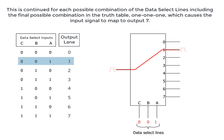This is continued for each possible combination of the data select lines, including the final possible combination in the truth table, 111, which causes the input signal to map to output 0.